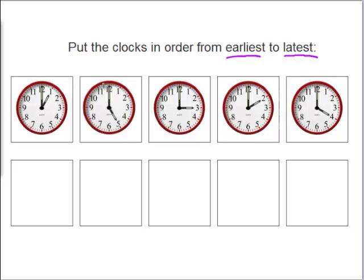So let's begin by writing down the times of each clock. Now we know this clock says it is 1 o'clock. This clock says it is 5 o'clock. This clock says 3 o'clock. This clock says 2 o'clock. And this clock says 4 o'clock.